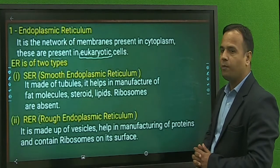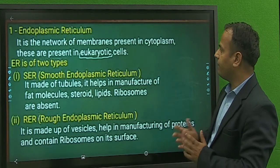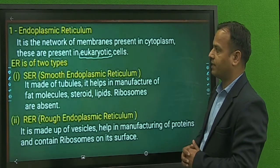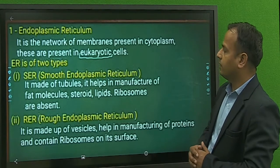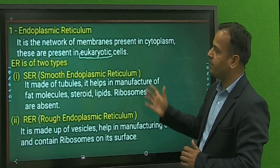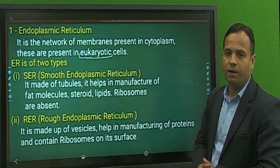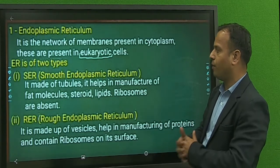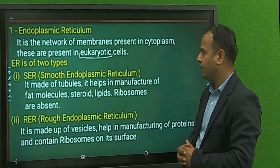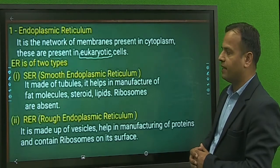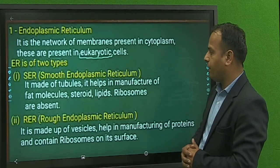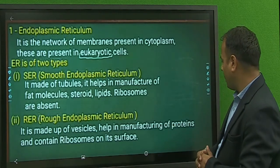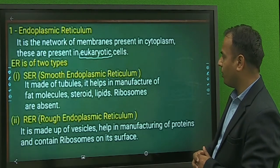Endoplasmic reticulum. It is the network of membranes, present in eukaryotic cells. The endoplasmic reticulum is of two types: Smooth endoplasmic reticulum and Rough endoplasmic reticulum. Smooth endoplasmic reticulum is made up of tubules, helping in the manufacturing of molecules, steroids, and lipids. Rough endoplasmic reticulum is made up of vesicles and helps in the manufacturing of proteins, and contains ribosomes on its surface.